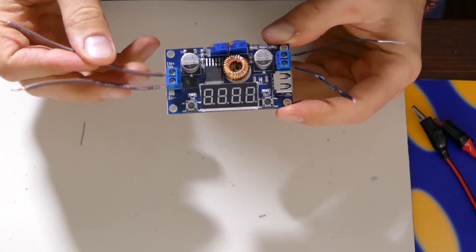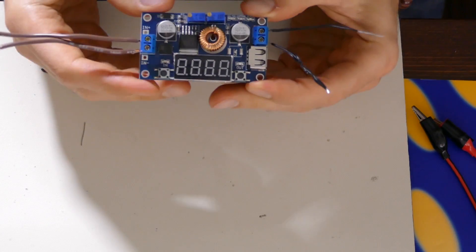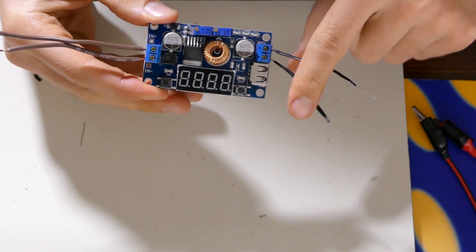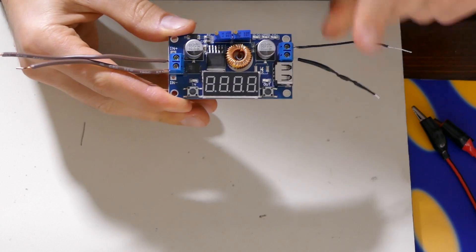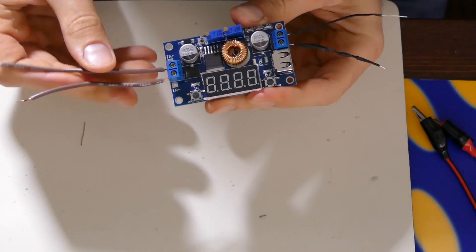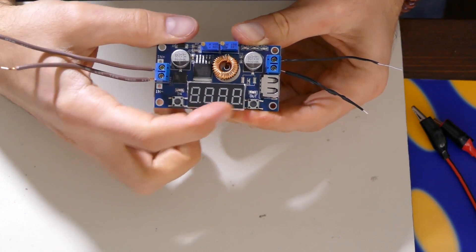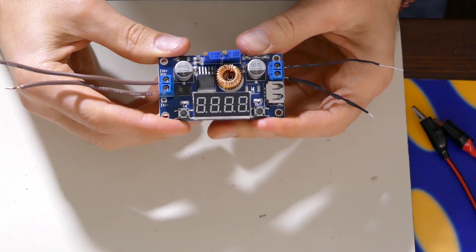Alright guys, we've got a new part in from China and this is a step-down converter. It's basically to bring voltage in and be able to step it down to a lower voltage or a lower current. This one is especially cool because it has an LCD there that will tell you the voltage and the current passing through as well as power I believe.